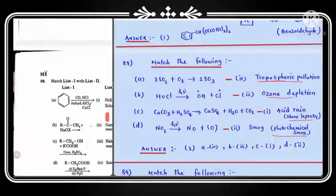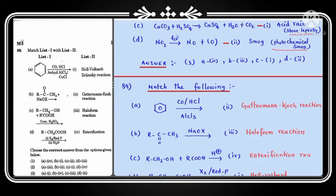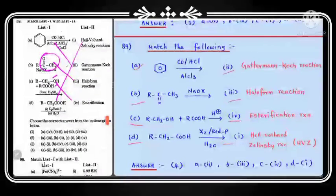Question number 89 is a match type on name reactions. Benzene with CO and HCl in presence of AlCl₃ and CuCl is the Gattermann reaction (A→2). The reaction of RCOOC₂H₅ with NaOH is esterification/saponification (B→3). A carboxylic acid with halogenation is the Hell-Volhard-Zelinsky (HVZ) reaction (D→1). Matching: A→2, B→3, C→4, D→1. Option 4 is the correct answer.